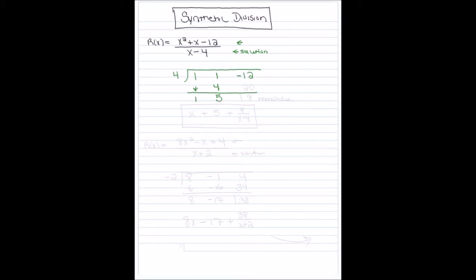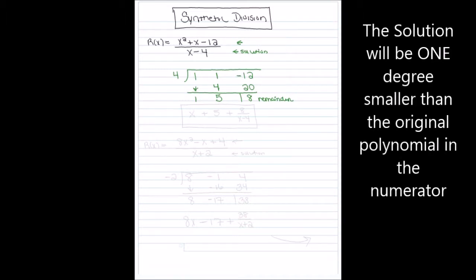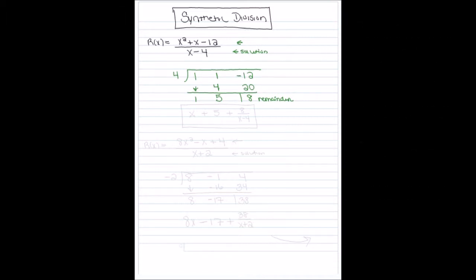Then I start the process over. I take the 5 and multiply it by the solution on the outside, which is 4. Five times 4 is 20, and I put it in the next column. I bring the two numbers together and get positive 8. That positive 8 is your remainder. The numbers I got — 1, 5, and 8 — are coefficients of the new polynomial, which is one degree less than the numerator. So my solution is x plus 5, and then the remainder 8 goes over the denominator x minus 4.